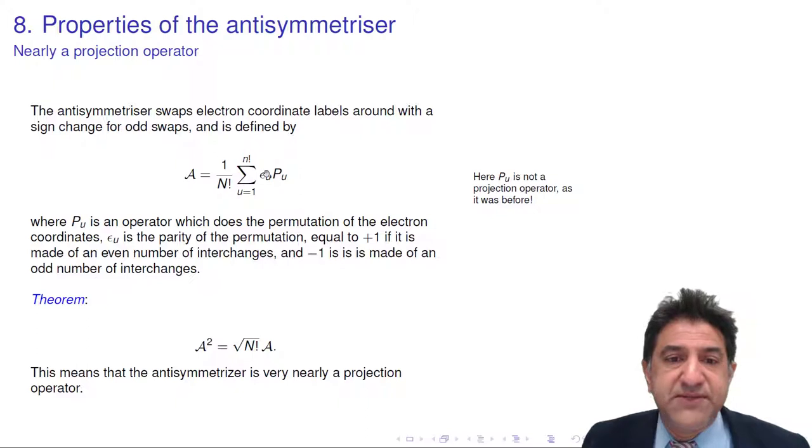And here is the phase factor. Don't be confused by this P. It's not a projection operator, as occurs in previous lectures. Here it represents a permutation operator. We have this theorem which we really need, and that is if we perform the antisymmetrizer twice,